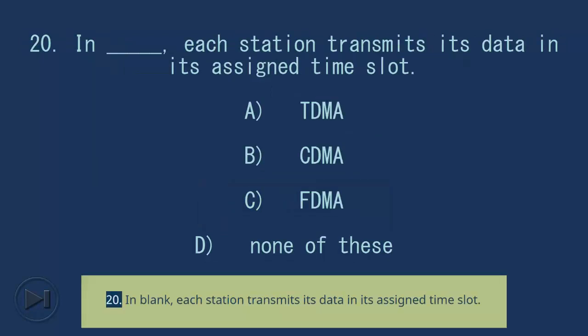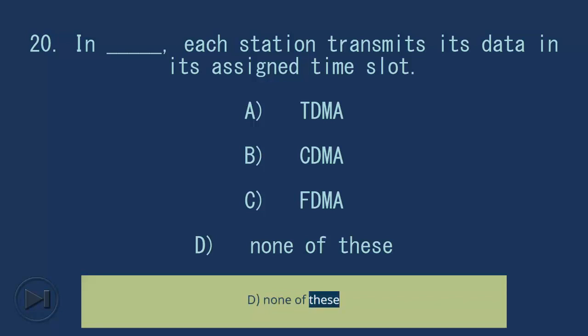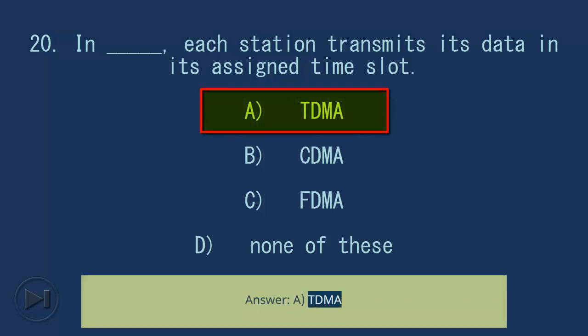Question 20: In blank, each station transmits its data in its assigned time slot. A) TDMA, B) CDMA, C) FDMA, D) None of these. Answer: A) TDMA.